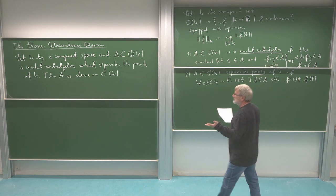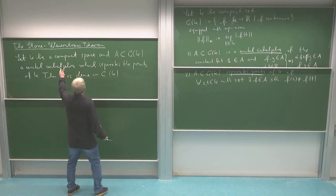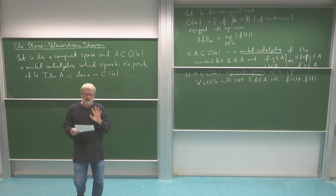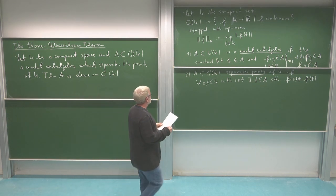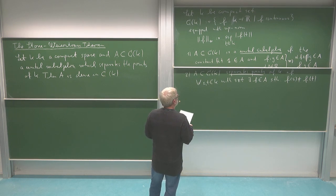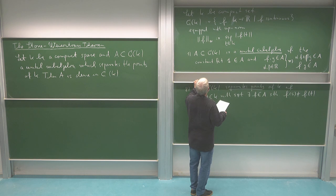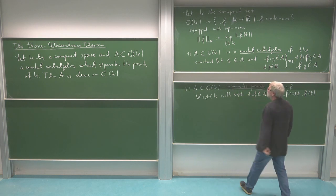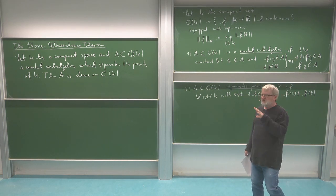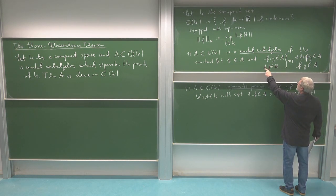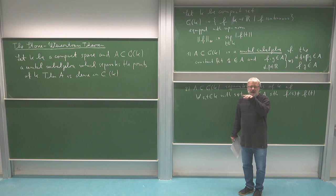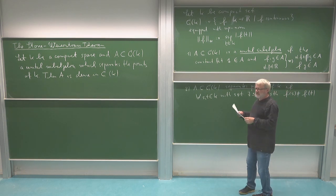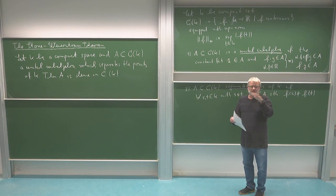That's all I require: a unital sub-algebra which respects the algebraic operations and can separate any two points from each other. Note that asking the constant function 1 is in A implies all constant functions are in A, because multiplying by a real number alpha gives the constant function alpha. But of course constant functions do not separate points, so I need something more.